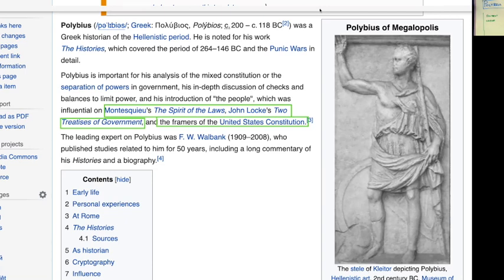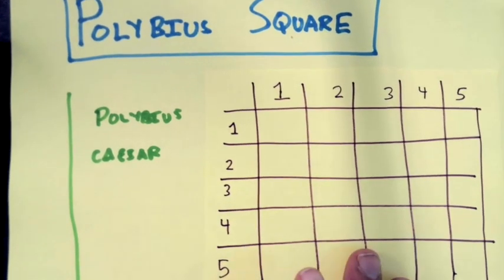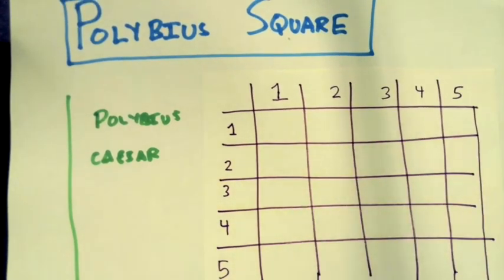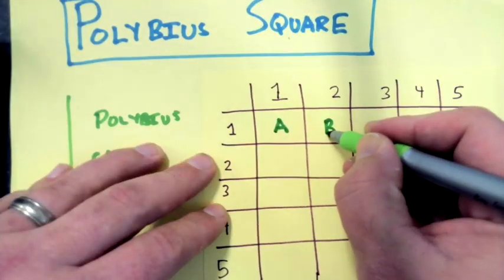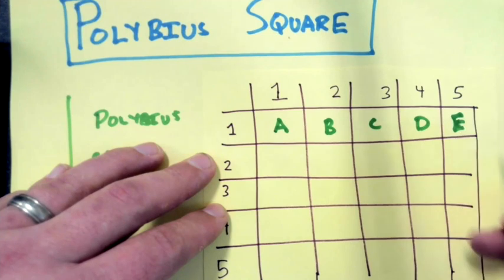So the square that Polybius invented is a way of storing information. And depending on how you intend it, it can be a code or a cipher. But the way a Polybius square works is you take an n-by-n square. And here, n is going to be 5. And you write the alphabet. And the problem is, I have 26 letters and only 25 slots. So what should we do?